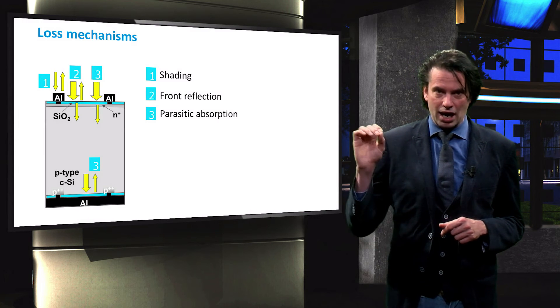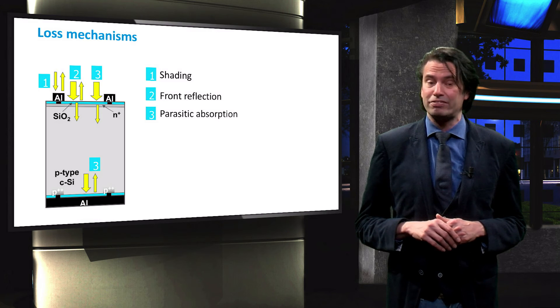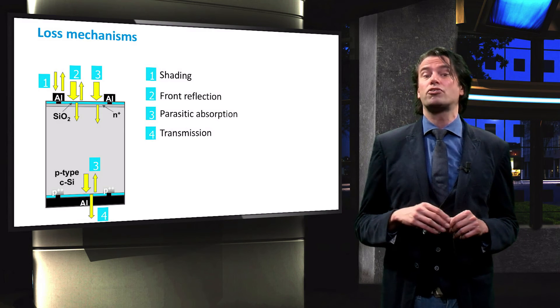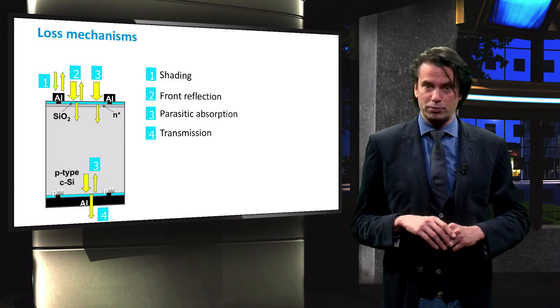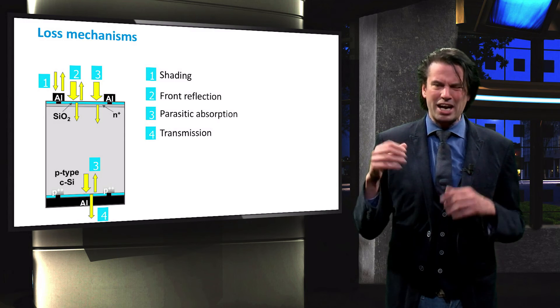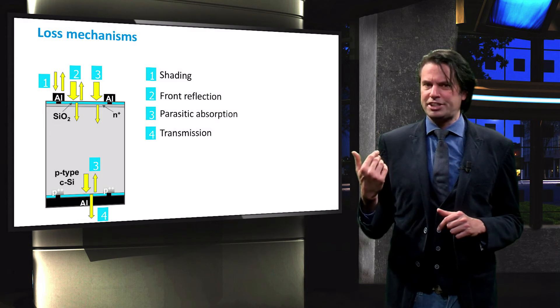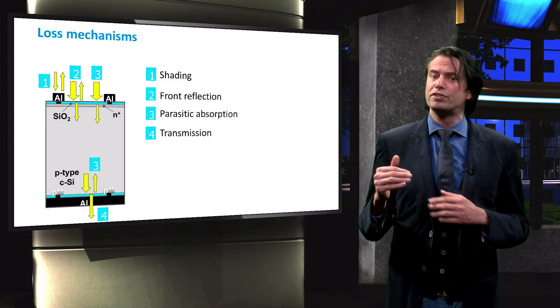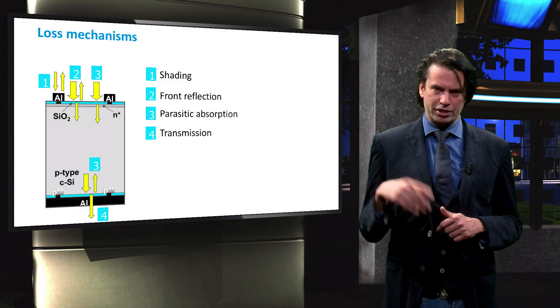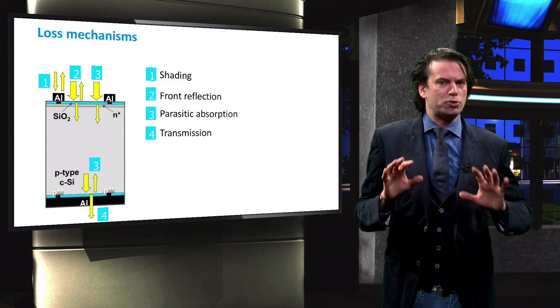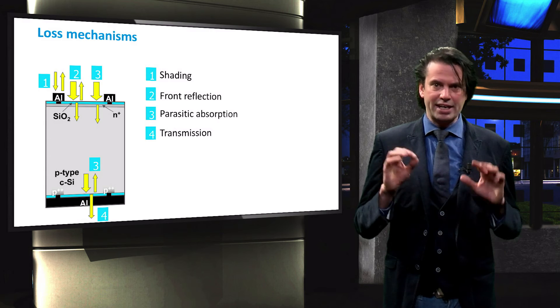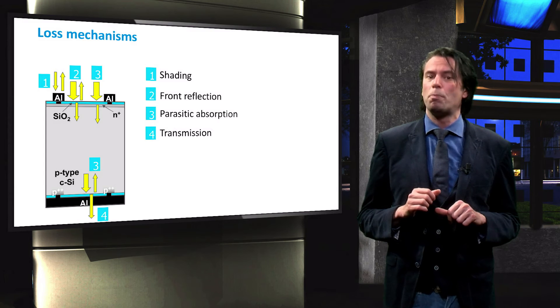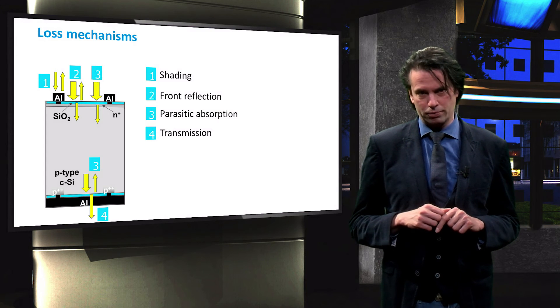The final loss mechanism concerns the transmission of photons from the solar cell without being absorbed. This generally involves photons with energy equal to or slightly above the bandgap energy. These photons have a lower absorption probability. They can therefore travel through the cell without being absorbed due to the limited optical thickness of the solar cell.